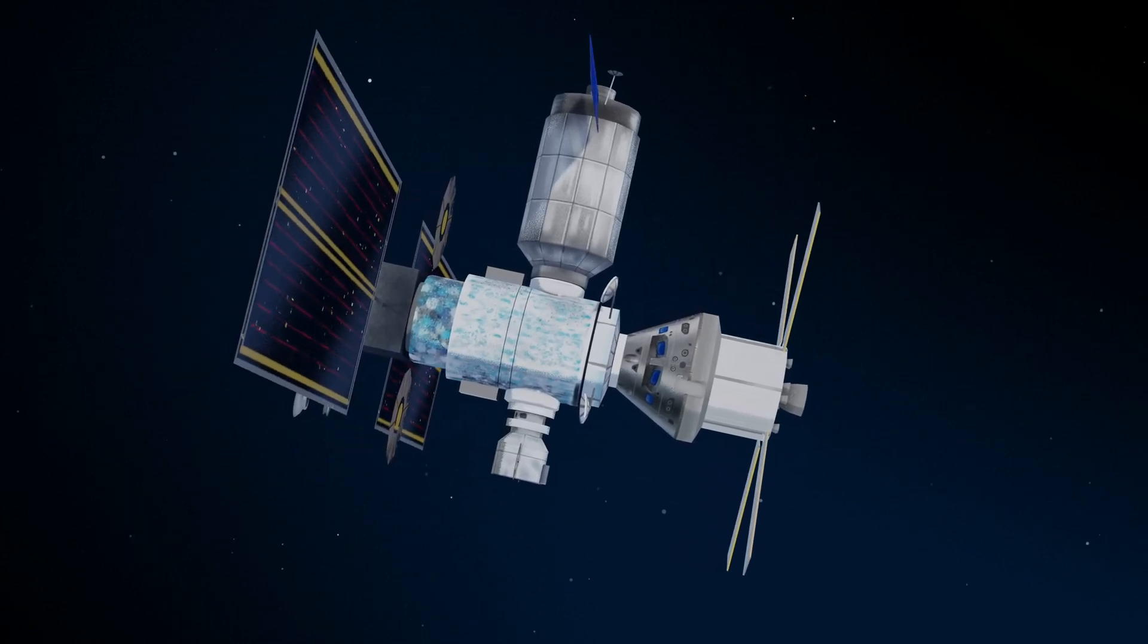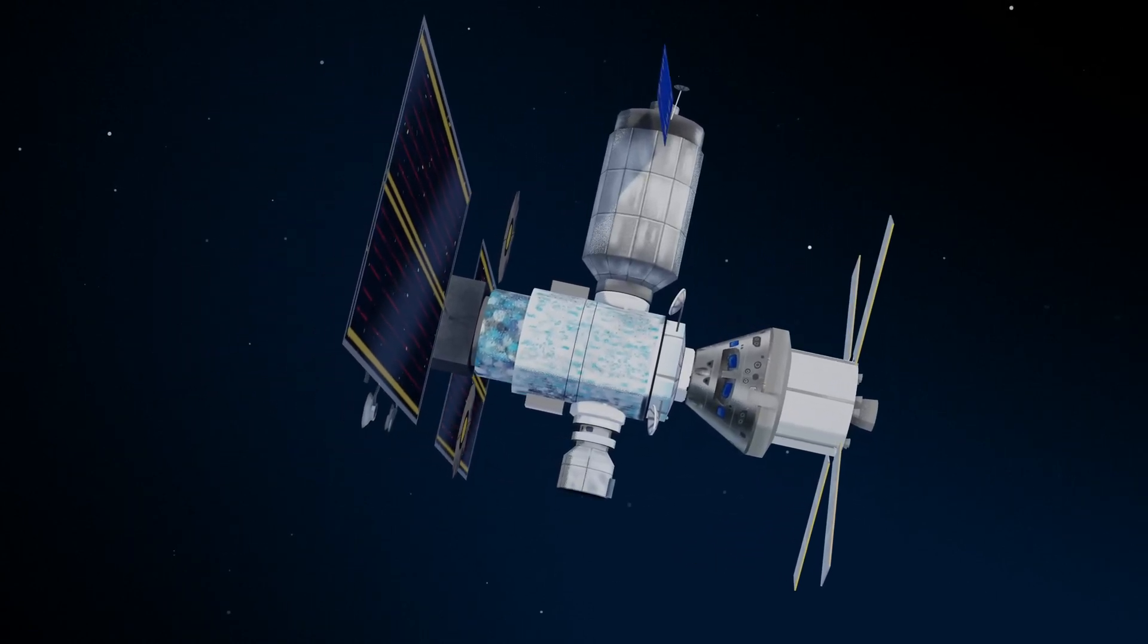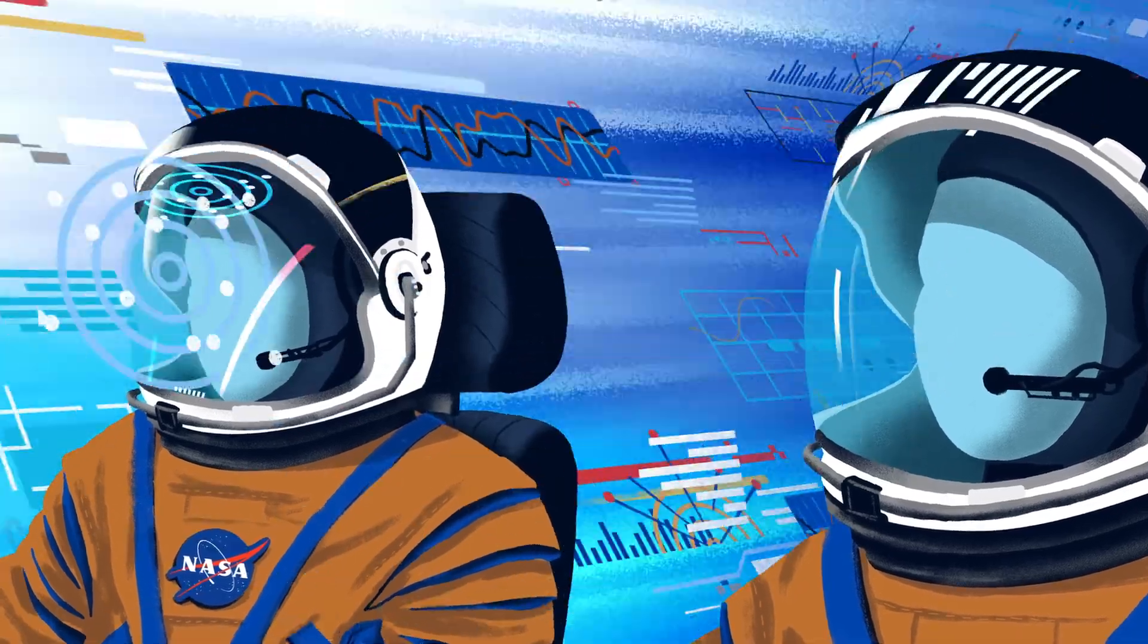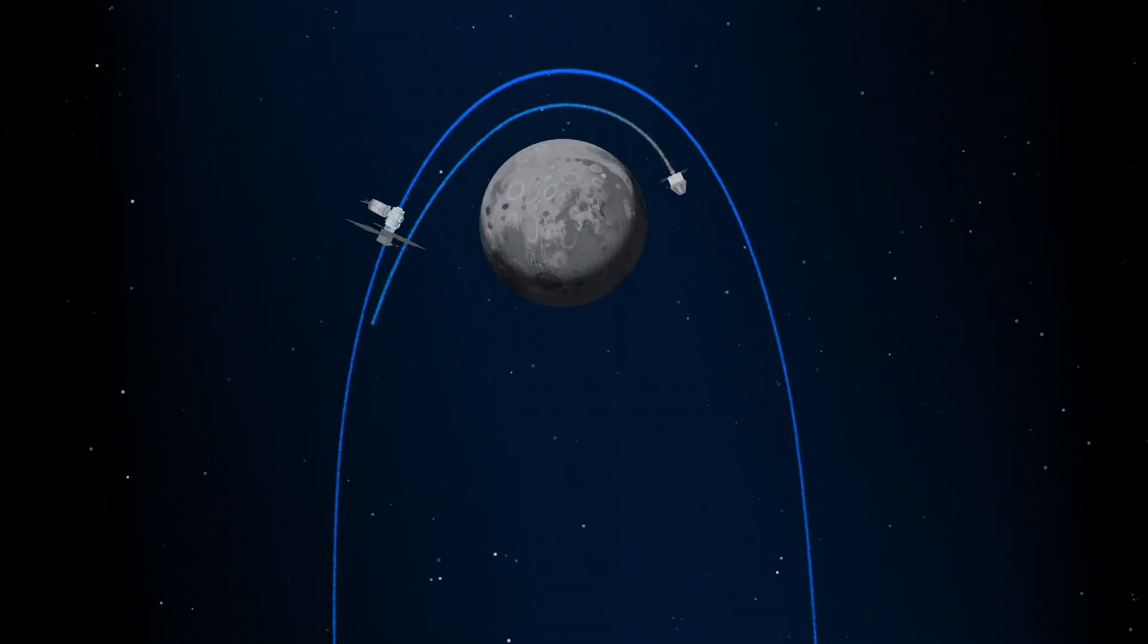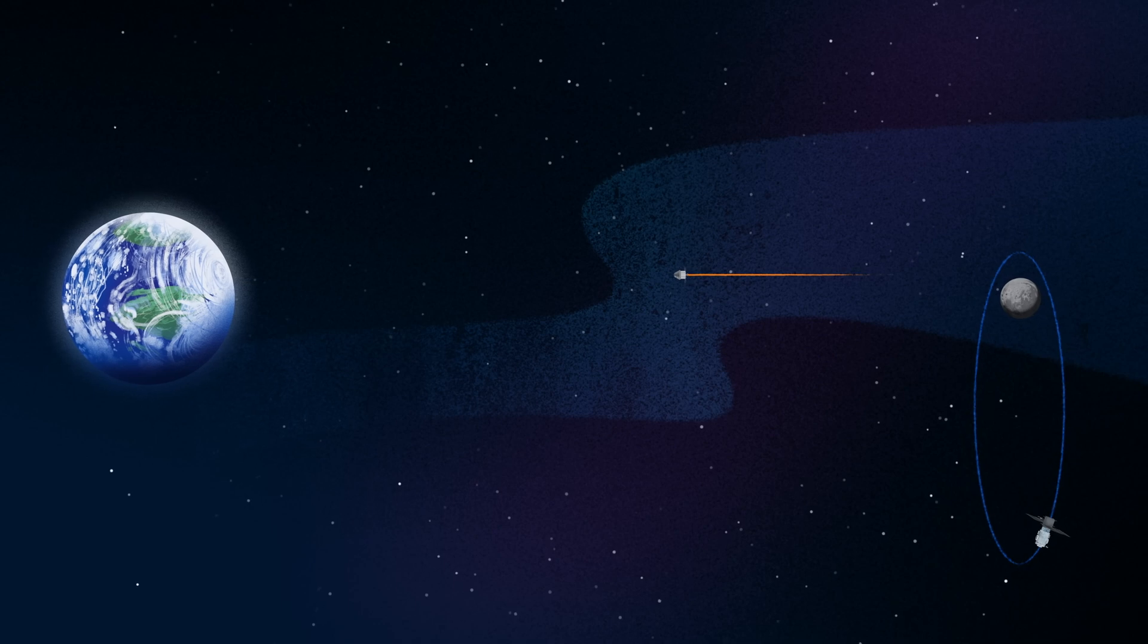Once back aboard the Orion spacecraft and undocked from Gateway, the crew fire their engine once to break out of the halo orbit, and once again to sling the spacecraft around the Moon, placing it on a multi-day trajectory back towards Earth.